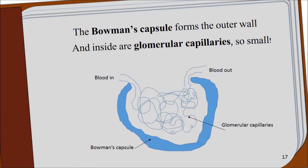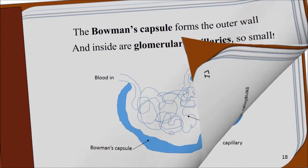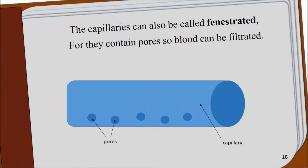The Bowman's capsule forms the outer wall, and inside are glomerular capillaries so small. The capillaries can also be called fenestrated, for they contain pores so blood can be filtrated.